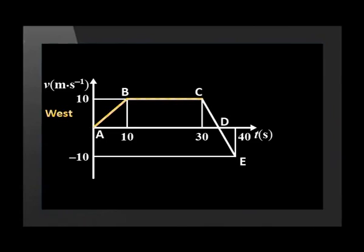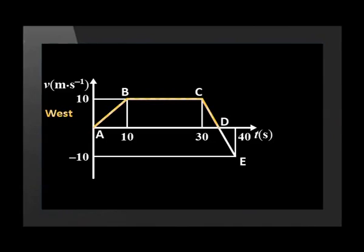In the next section of the graph, the velocity line is horizontal. We see that the car travels at a constant velocity of 10 meters per second for 20 seconds. Now let's look at section C to D, where we see that the velocity decreases from 10 meters per second to zero in 5 seconds. There is constant deceleration because it is a straight line.